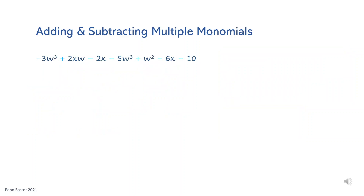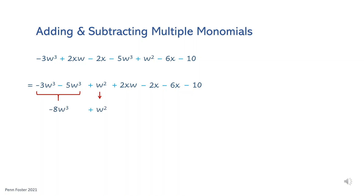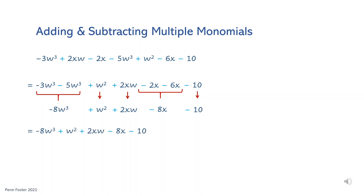Let's simplify another polynomial. First, rearrange terms to have like terms grouped together. There are two terms for w cubed, one term for w squared, one term for xw, two terms for x, and one constant. Subtract the first two like terms — it's negative 8w cubed. Bring down w squared and 2xw as is, since they do not belong to any groups. Subtract negative 2x minus 6x — that's negative 8x. Finally, bring down 10 as is. The simplified form is negative 8w cubed plus w squared plus 2xw minus 8x minus 10.